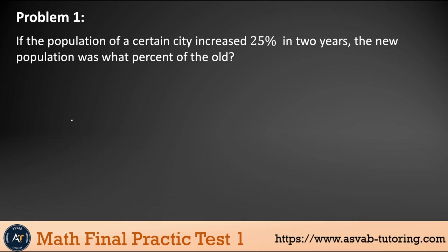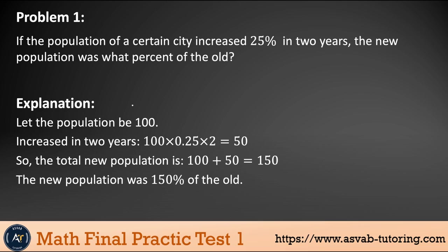Problem 1: If the population of a certain city increased 25% in two years, the new population was what percent of the old? Let the population be 100. If it increased 25% per year for two years, that's 100 × 0.25 = 25, times two = 50. Adding 50 to the original 100 gives 150. So the new population was 150% of the old one.